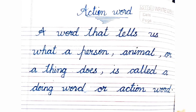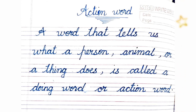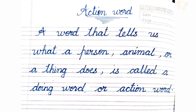Now let's learn the definition of action word. What is an action word? A word that tells us what a person, animal or a thing does is called a doing word or action word. Write this in your classwork copy. Thank you.